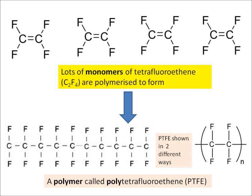In this example the monomer is tetrafluoroethene, that's C2F4. Along the top you can see lots of different monomer molecules — normally there will be lots and lots of them. When they're polymerized, that double bond between the two carbon atoms breaks up and they all line up.